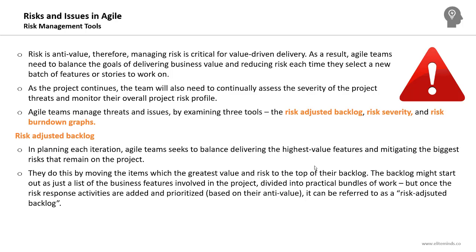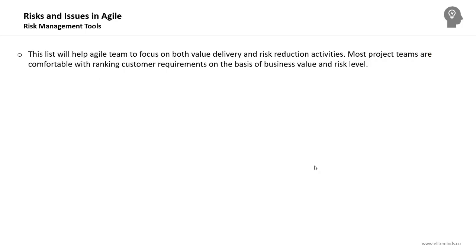The items with the highest impact and highest value will be on the top of the backlog, meaning they have the highest priority. The backlog might start as just a list of business features divided into practical bundles of work. But once risk response activities are added and prioritized, it can be referred to as a risk-adjusted backlog. This list helps the agile team focus on both value delivery and risk reduction activities.